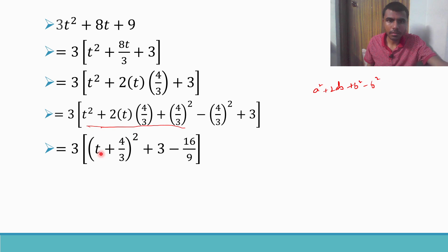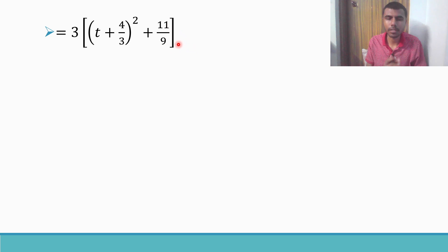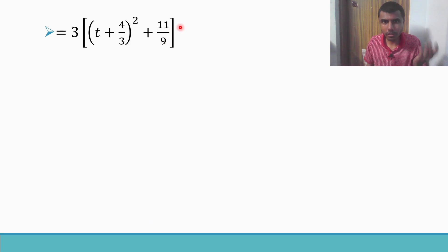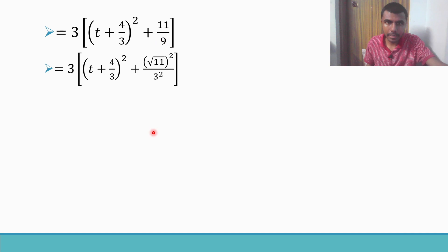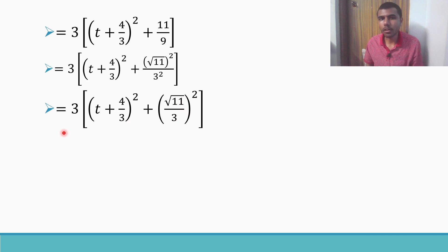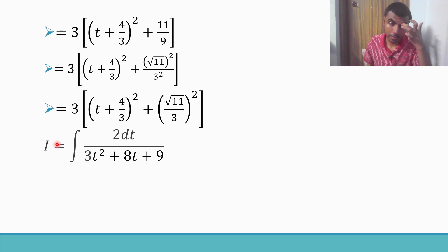11/9 equals (√11)²/3² which is (√11/3)². So the denominator is 3[(t + 4/3)² + (√11/3)²]. Coming back to our integral, I = ∫2dt / {3[(t + 4/3)² + (√11/3)²]}. Taking 2/3 outside: I = (2/3)·∫dt / [(t + 4/3)² + (√11/3)²].